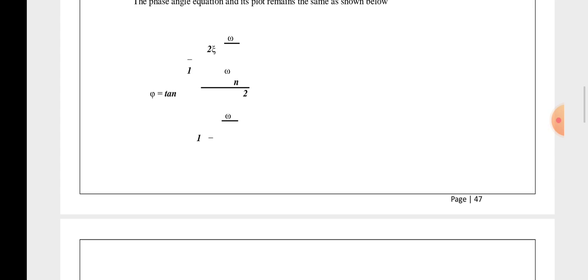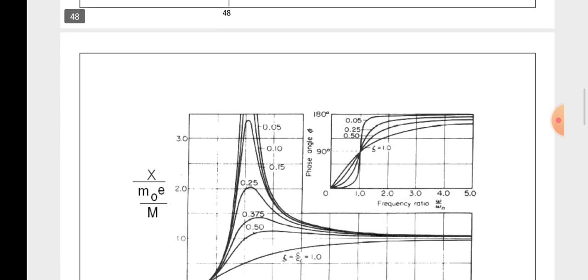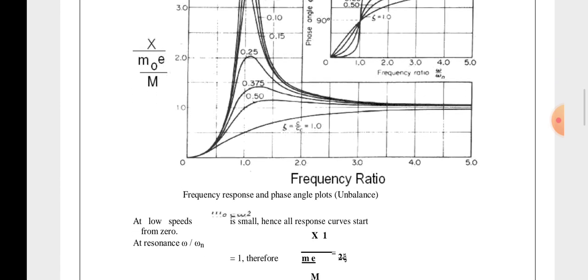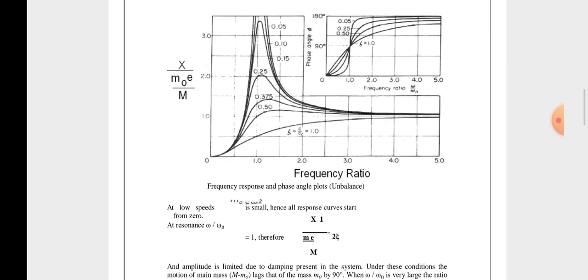Now this picture shows that frequency ratio response and the top of your phase angle. Look at the frequency ratio that we are having the case. Frequency ratio tends to X upon (m0 e upon capital M). At the initial eta, I mean very less, it goes on increasing and after that it will decrease and remains constant.